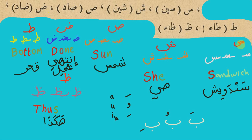Now, this letter SA — that's how it looks at the beginning of a word. In the middle of a word, and at the end of a word. Its sound is similar to the S sound in 'Sandwich.'